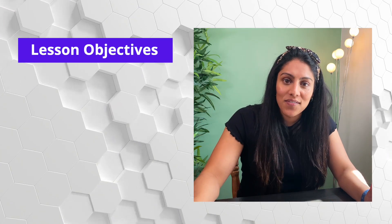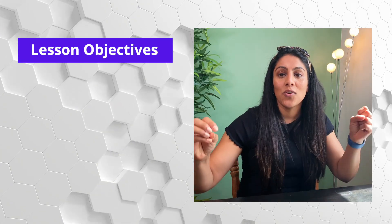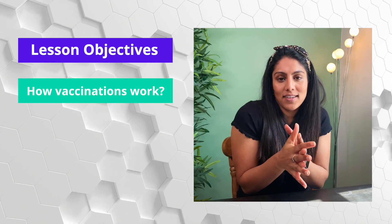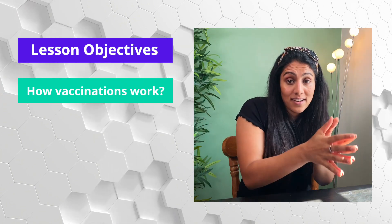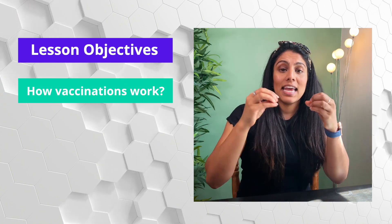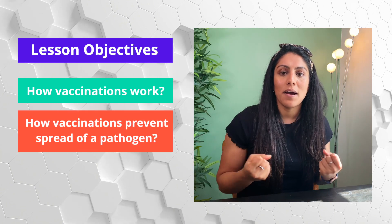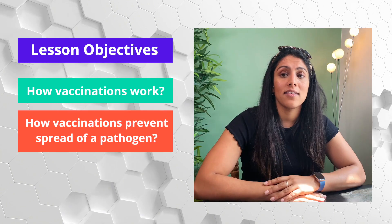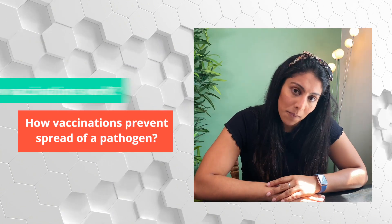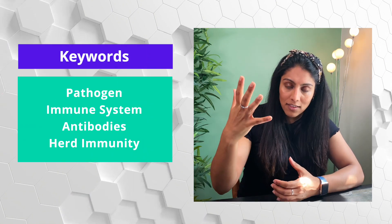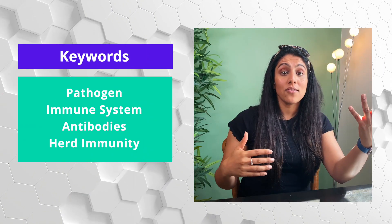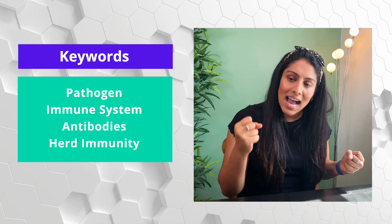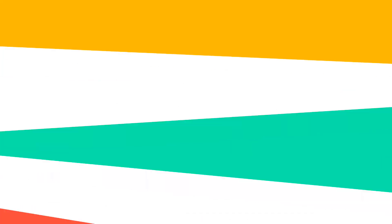So what are you going to learn at the end of this lesson? You're going to be able to describe how vaccinations can prevent illness in an individual and describe how vaccinations can also prevent the spread of pathogens in a population. Key words to look out for are pathogen, immune system, antibodies, and herd immunity.